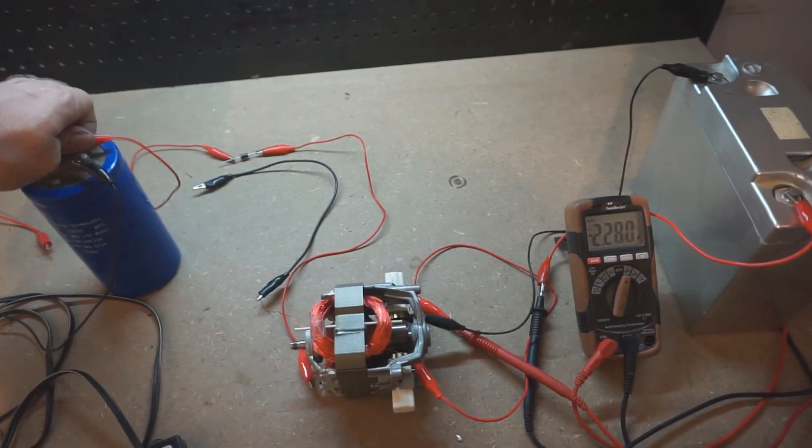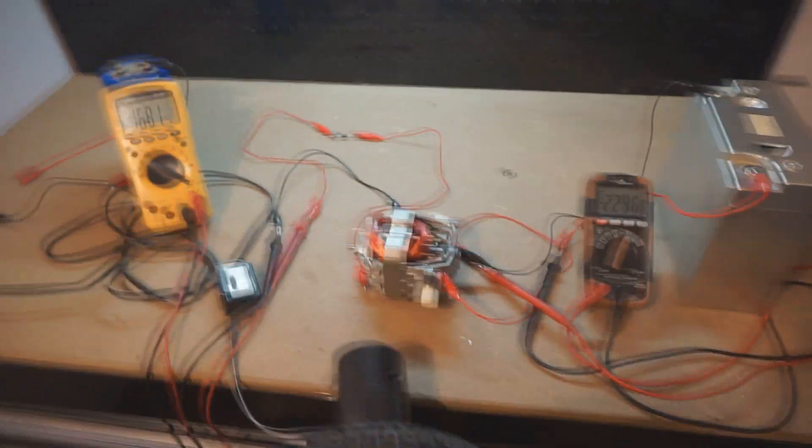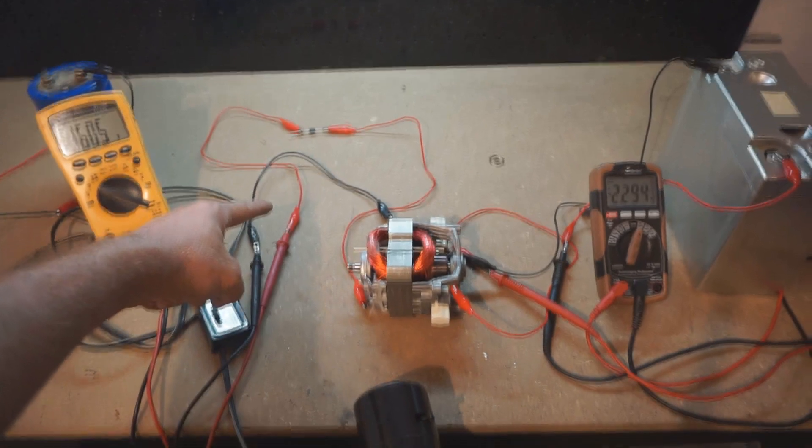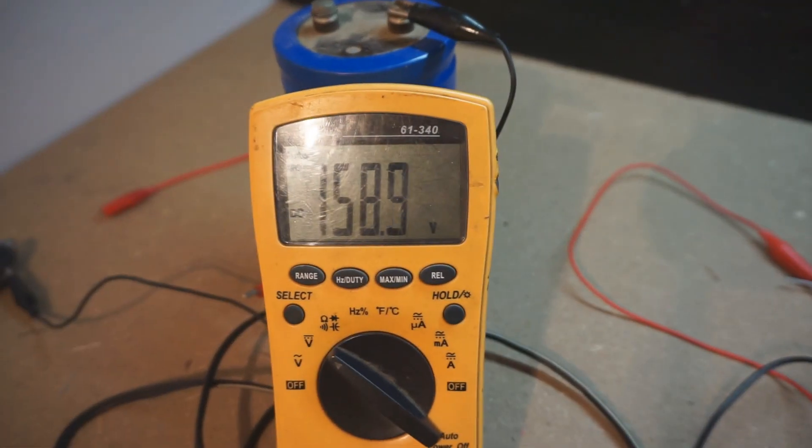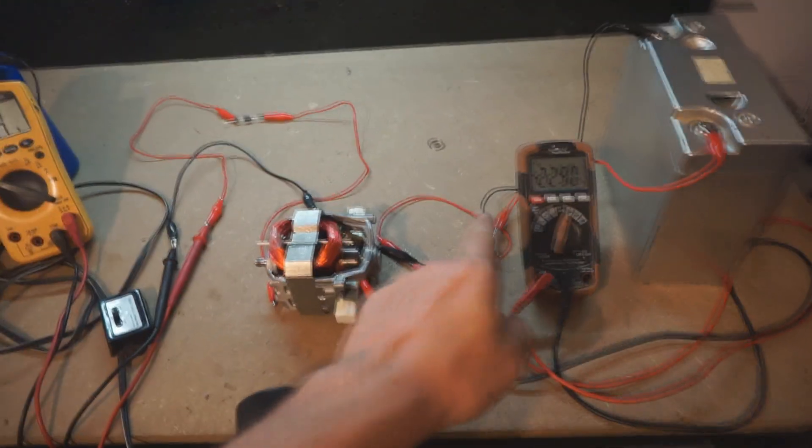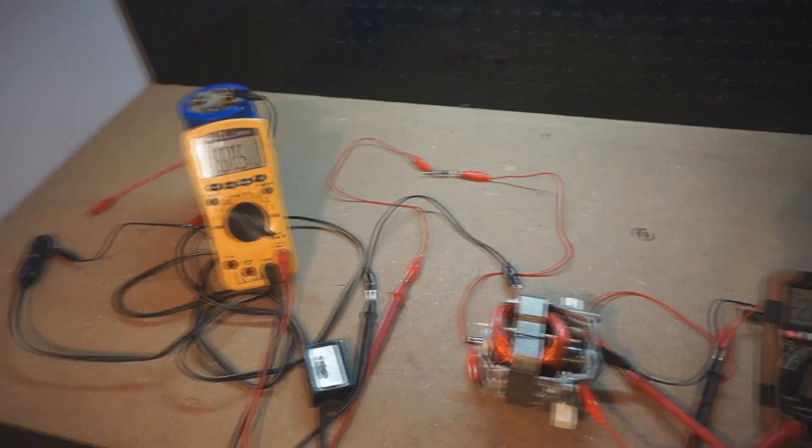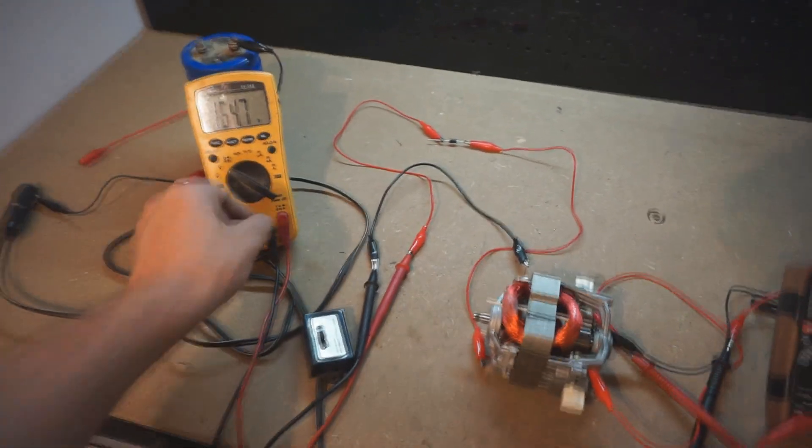Connecting my multimeter here to the output of the generator coils to measure the voltage, you can see that it's 160 volts. You can also see here that we're doing 2.2 amps in because there's essentially no load on the system right now.